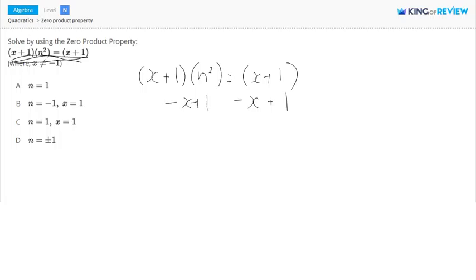So this right side will turn into a zero. And so this equation now says x plus 1 times n squared minus x plus 1 is equal to zero. So there's your zero.